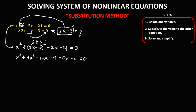Combine like terms. x squared plus 4x squared gives 5x squared. Negative 12x and negative 5x gives negative 17x. Positive 9 minus 21 gives negative 12. So the equation becomes 5x squared minus 17x minus 12 equals 0.